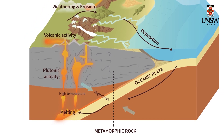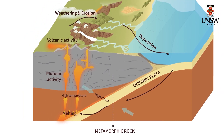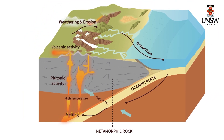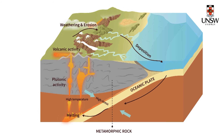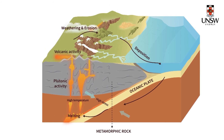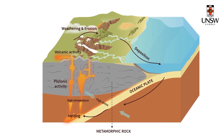For example, if your parent material is a shale, a sedimentary rock type, you can have a range of daughter rock types depending on the grade of metamorphism. This is important for engineers to know, as it dictates the mineral assemblage remaining.